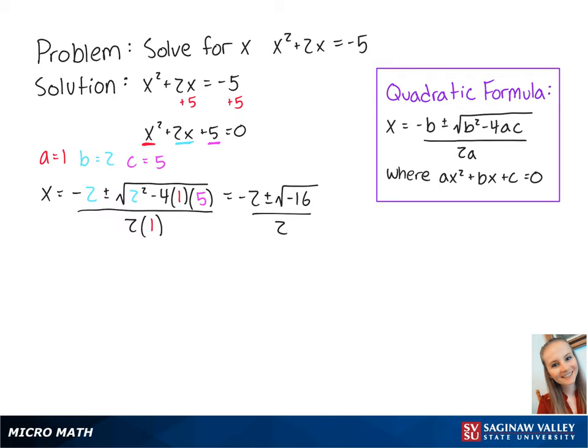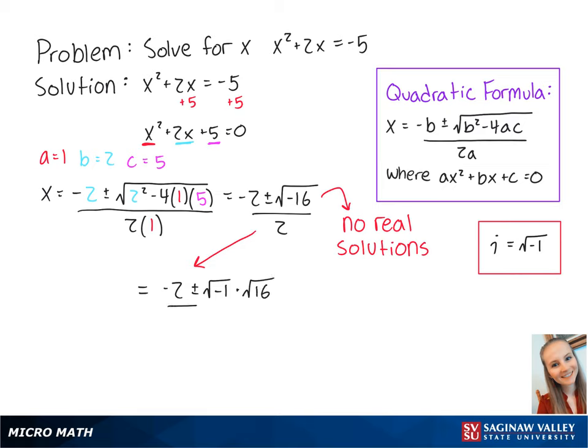Since we have a negative number underneath the square root, we have no real solutions for x. However, we can use i to solve for a complex solution. So we can rewrite this as negative 2 plus or minus the square root of negative 1 times the square root of 16 all over 2.